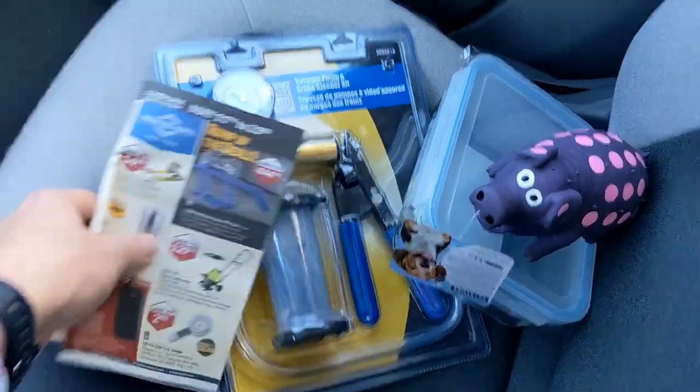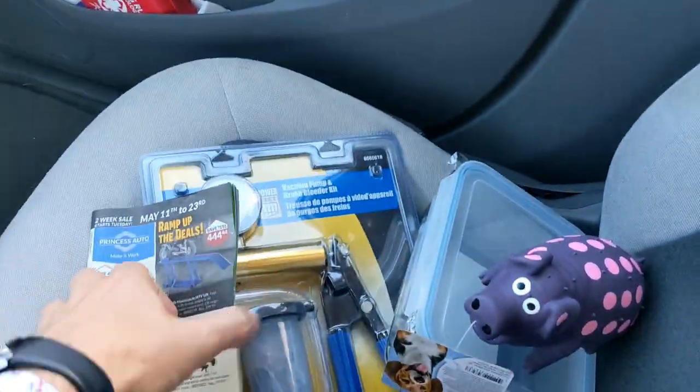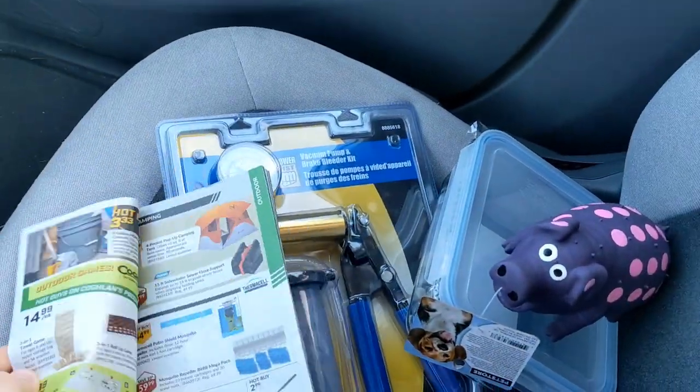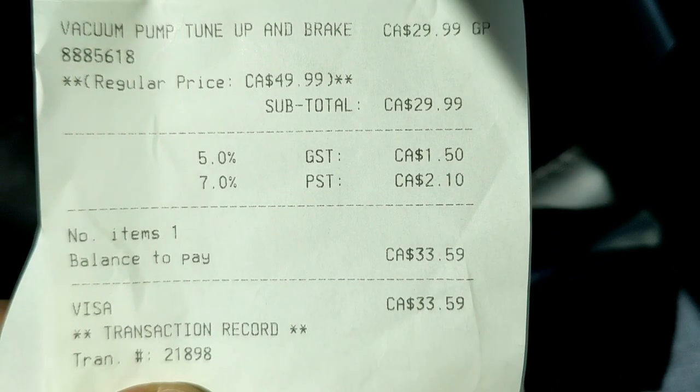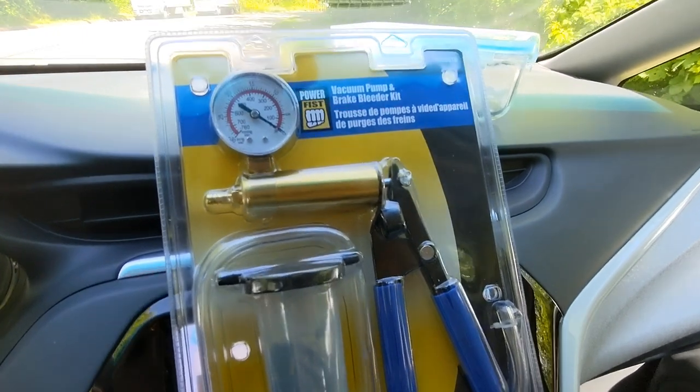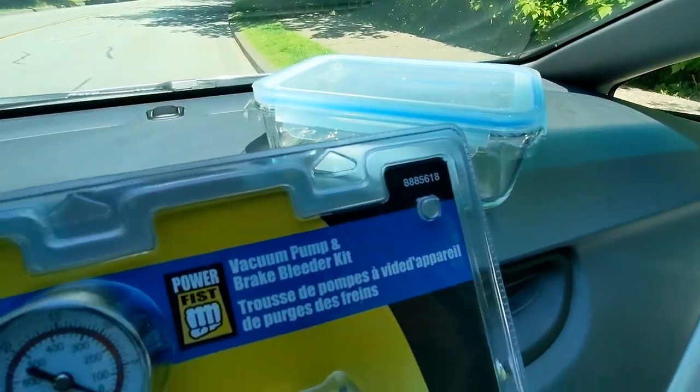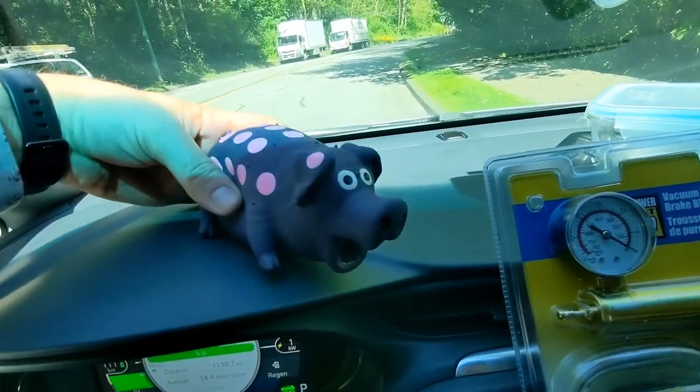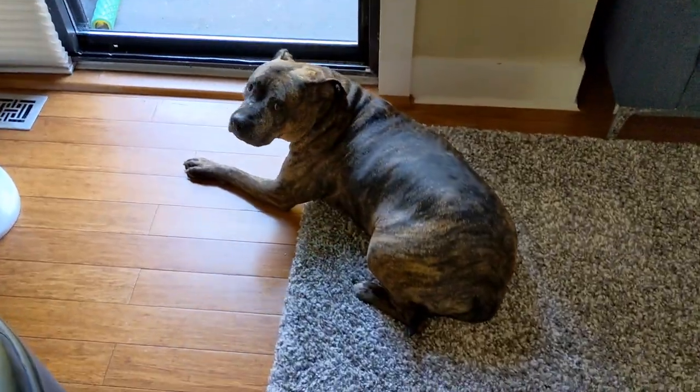Every time you go there you gotta pick up the latest deals. Scored a deal though, they're only 50 bucks but got them for 30. So we got 30 bucks for the brake pump, four bucks for the container, and our new mascot.